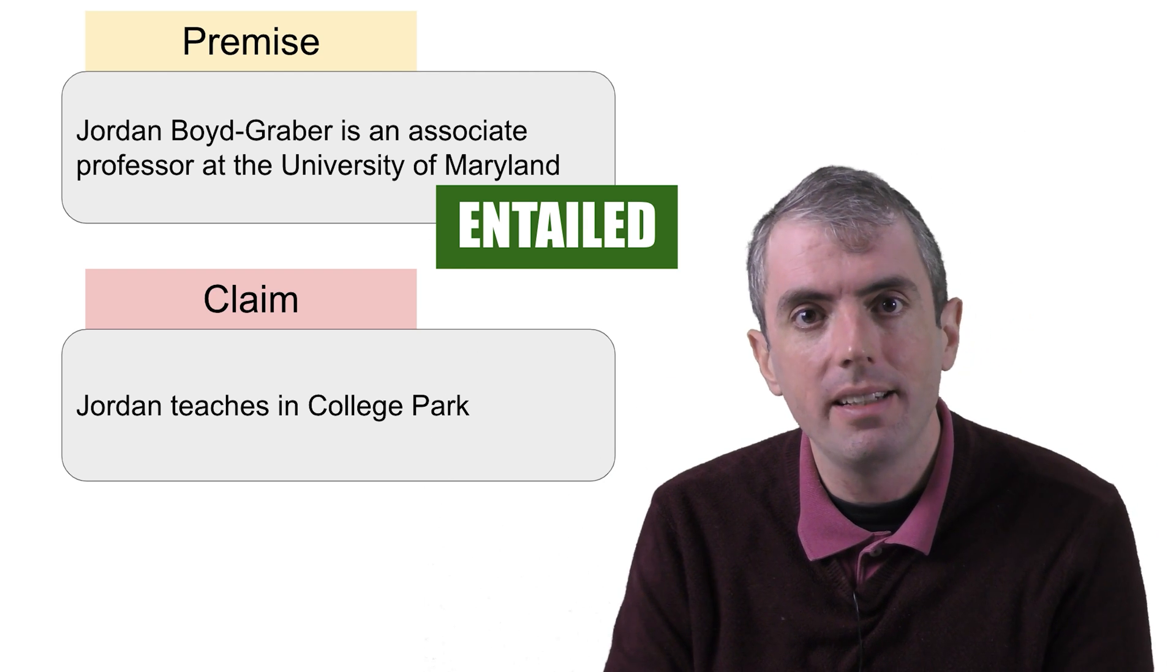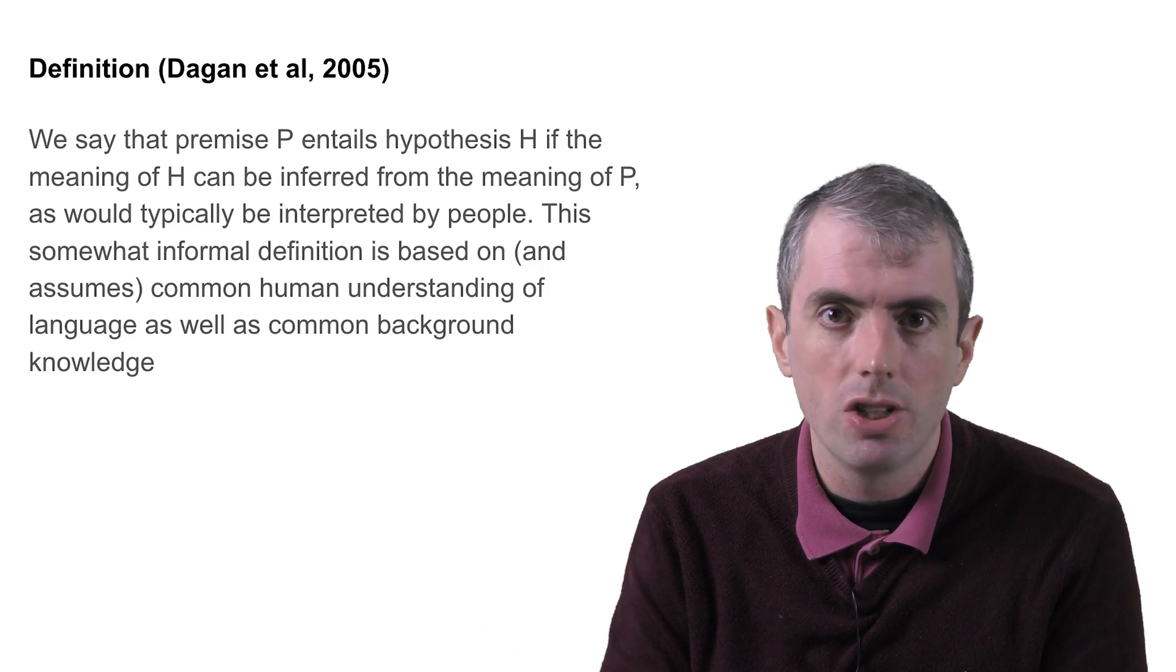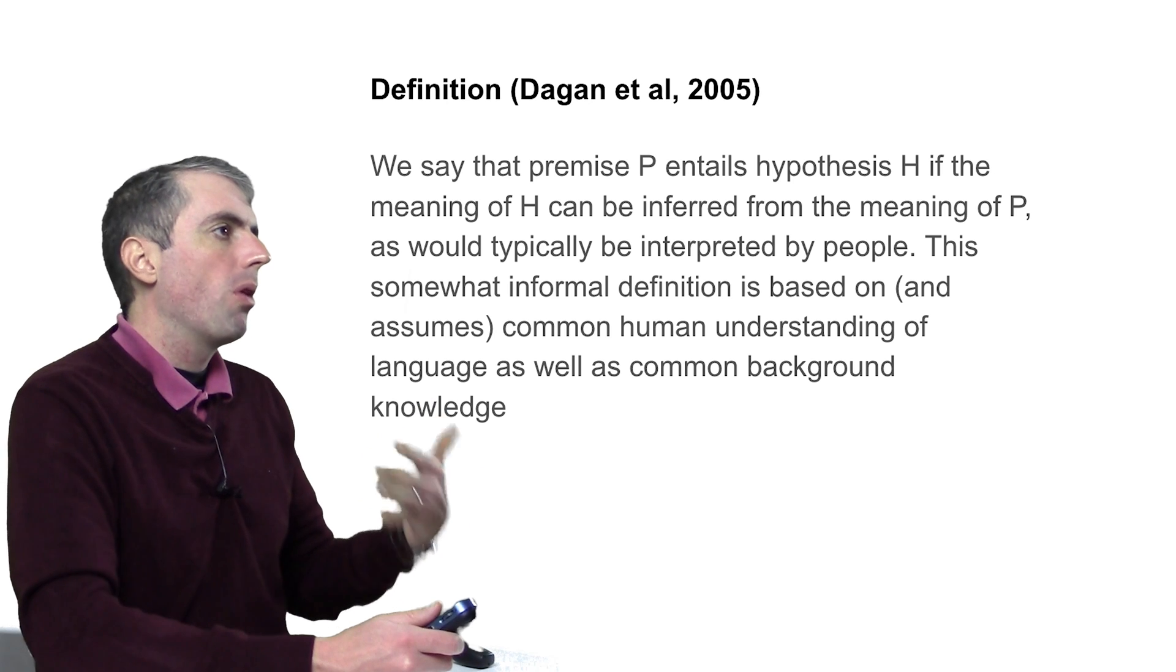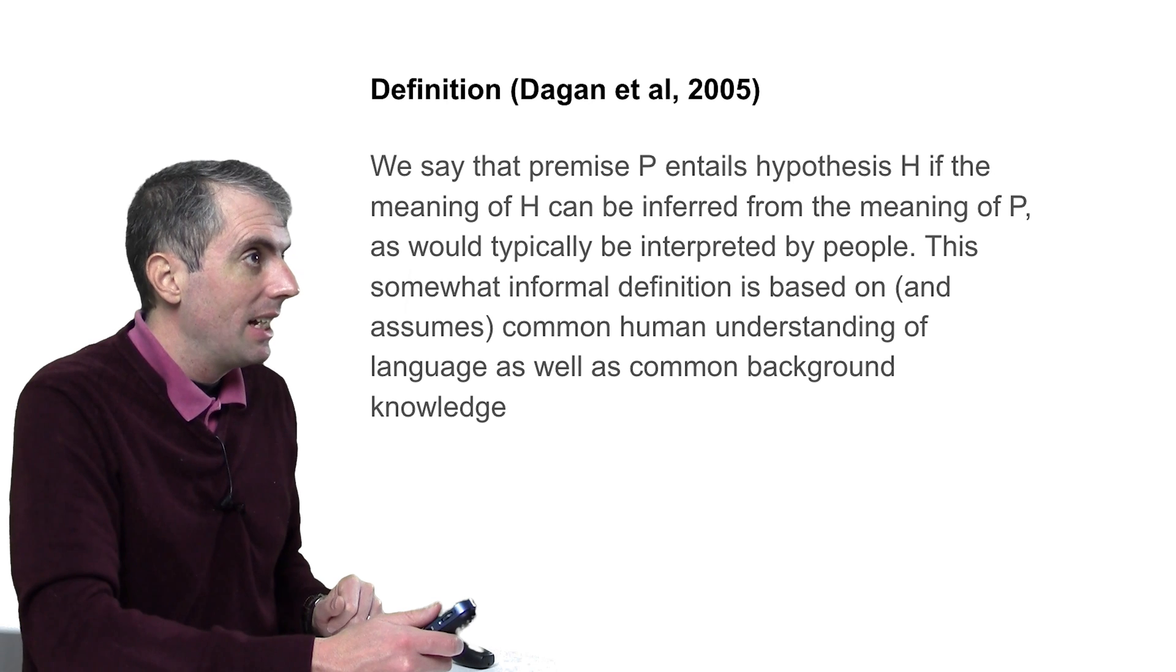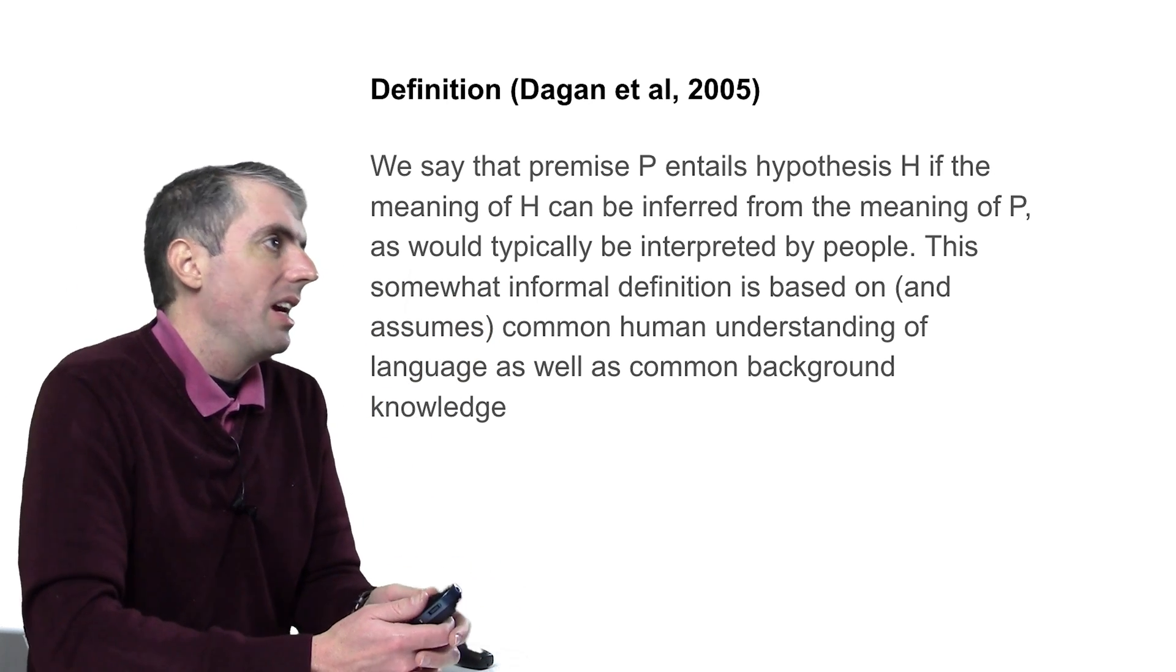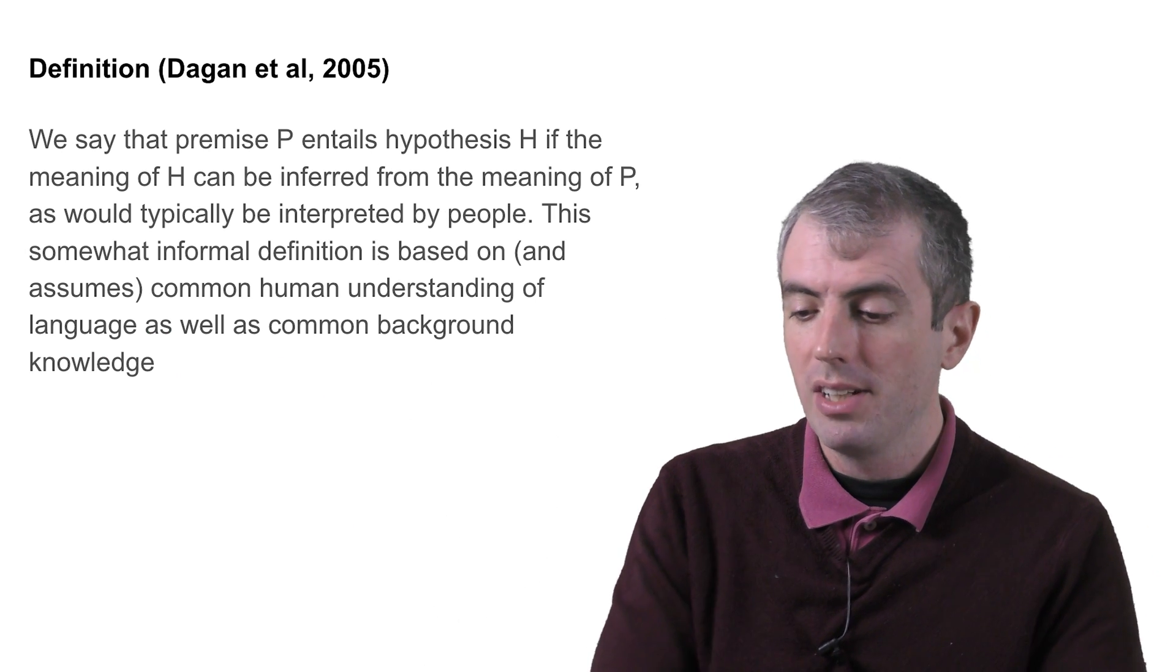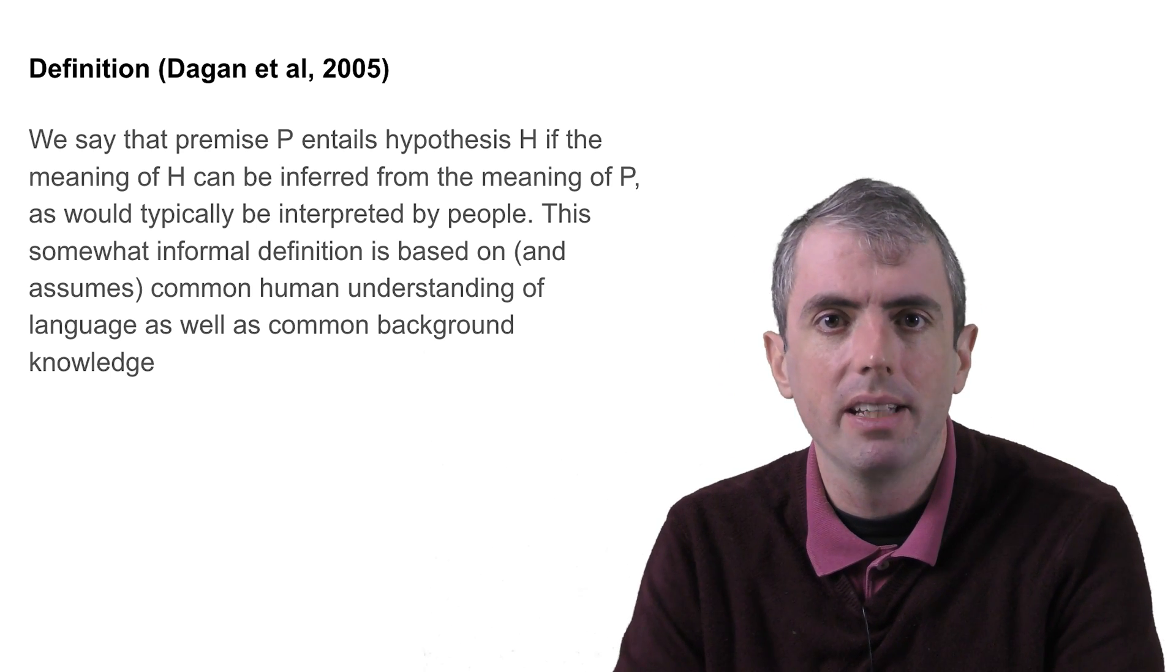In one of the most prominent datasets for textual entailment, the organizers gave the following definition. We say that premise P entails hypothesis H if the meaning of H can be inferred from the meaning of P, as would typically be interpreted by people. This somewhat informal definition is based on and assumes common human understanding of language as well as common background knowledge. Now, some of the clauses here are doing a lot of work, such as typically be interpreted by people, but we'll get into a little bit more of the details in a bit.